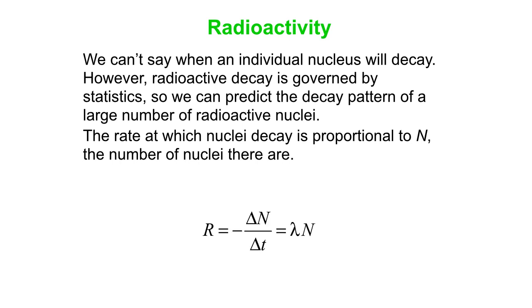And so there's our expression for that. The rate is minus delta n over delta t is lambda n. Lambda of course being the decay constant. So this is what we call the activity, how many nuclei decay per second. And lambda is the decay constant.